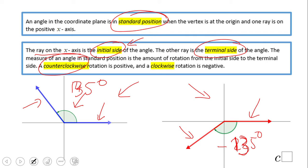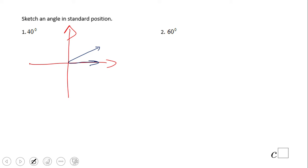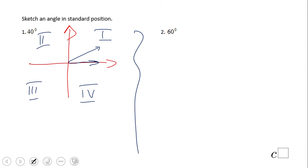Let's take a look at problem number one. We need to sketch an angle that is 40 degrees. Remember, the initial side is always on the x-axis. That's roughly a 40-degree angle — it's in quadrant one. Here we have quadrant two, quadrant three, and quadrant four. What do you think about number two?